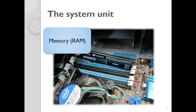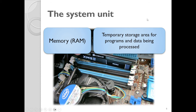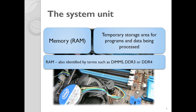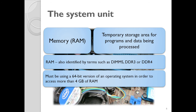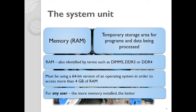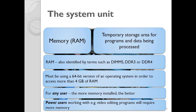The next component is memory or RAM. You can see the brand name Corsair — a very well-known, expensive brand — and DDR indicating what type of memory this is. RAM is a temporary storage area for programs and data being processed. It's identified in terms of DDR, DIMMs, DDR4. Importantly, in order for an operating system to recognize and access more than four gigs of RAM, it must be a 64-bit version. For any user, the more memory you have installed the better. For power users doing video editing, you are going to need a lot more RAM.